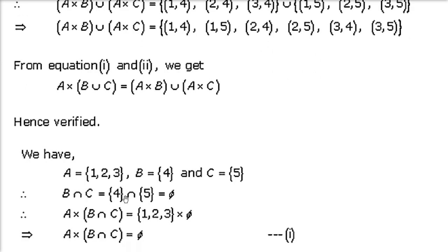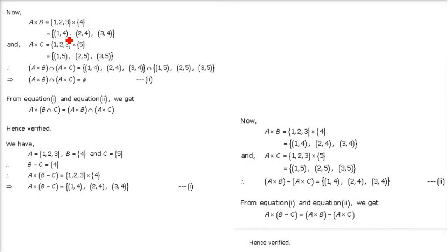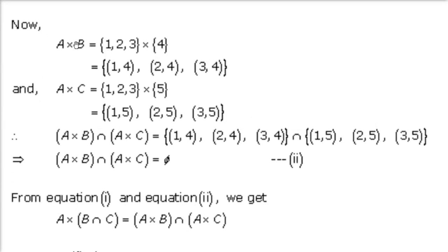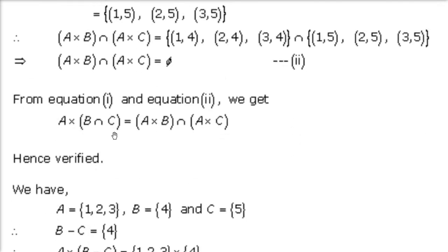Next one: verify A cross (B intersection C) = (A cross B) intersection (A cross C). A is {1,2,3}, B is {4}, C is {5}. B intersection C: since there is nothing common between {4} and {5}, it will be empty. A cross empty is always empty. So A cross (B intersection C) = empty. For the right hand side, A cross B = {(1,4),(2,4),(3,4)} and A cross C = {(1,5),(2,5),(3,5)}. Since nothing is common between these two, the intersection is also empty. Left hand side equals right hand side. Hence verified.